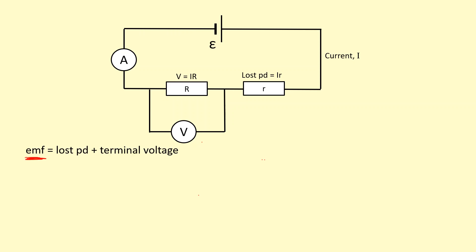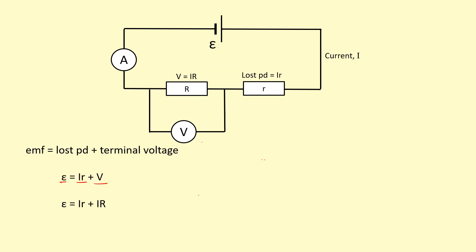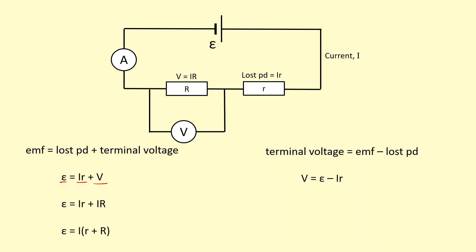We can think of EMF as the energy being supplied by the cell, and that gets used up in two ways: inside the cell itself, which is the lost PD, and the rest across whatever is connected to the circuit, which is the terminal voltage. This can be represented using many equations — EMF equals lost PD plus terminal voltage, or substituting IR terms: EMF = Ir + IR. If I factor out I, I get EMF = I(R + r), where R + r is the total resistance. Alternatively, terminal voltage V can be made the subject: V = EMF − Ir.